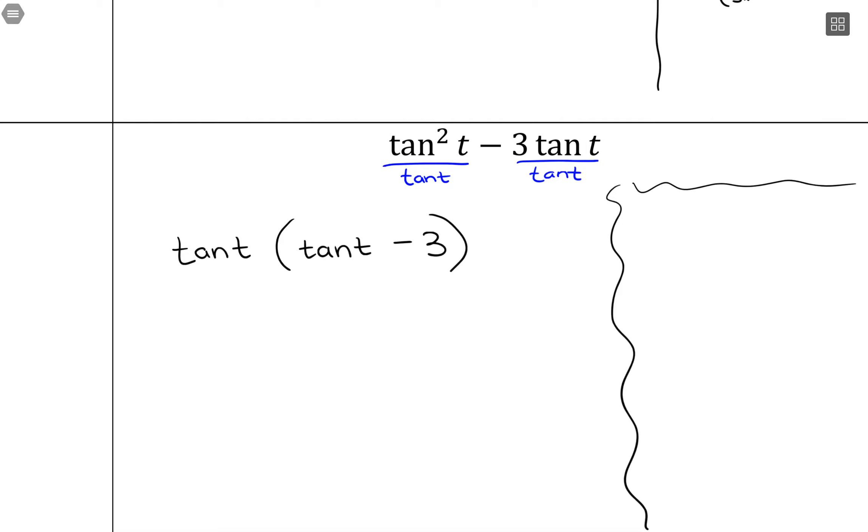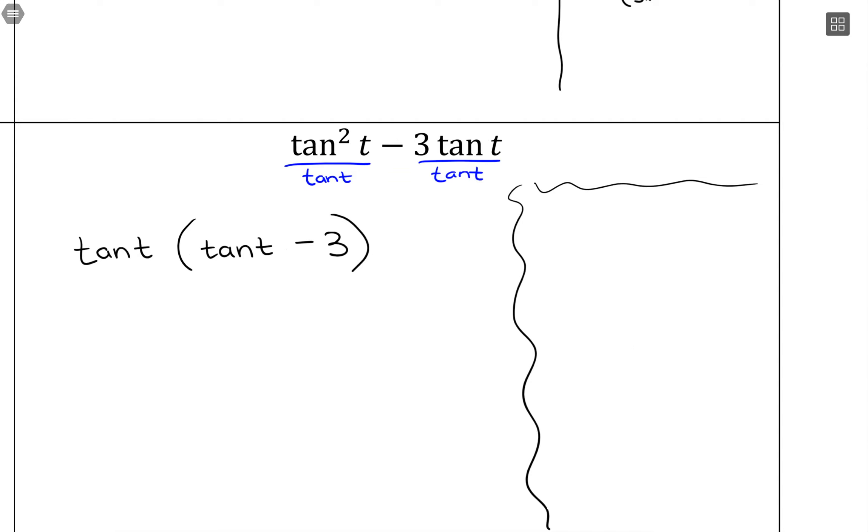Now, something I'm going to bring up when we get into more verifying identities is typically when I see tangent, I switch to sine and cosine. So what we could have done here without that factoring route, we could have gone, this is the same thing as sine of t over cosine of t squared minus 3 times sine of t over cosine of t.